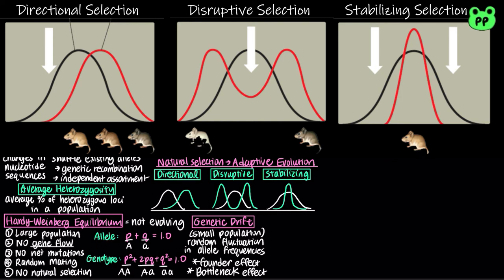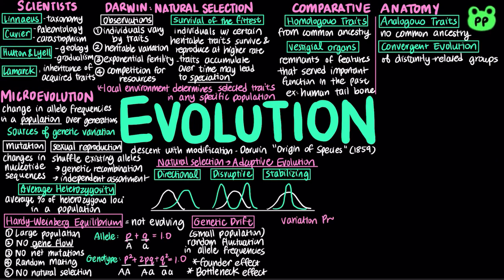Because environments change, adaptive evolution is a continuous process. Whereas genetic drift and gene flow are random and do not consistently lead to adaptive evolution as they can increase or decrease the match between an organism and its environment.